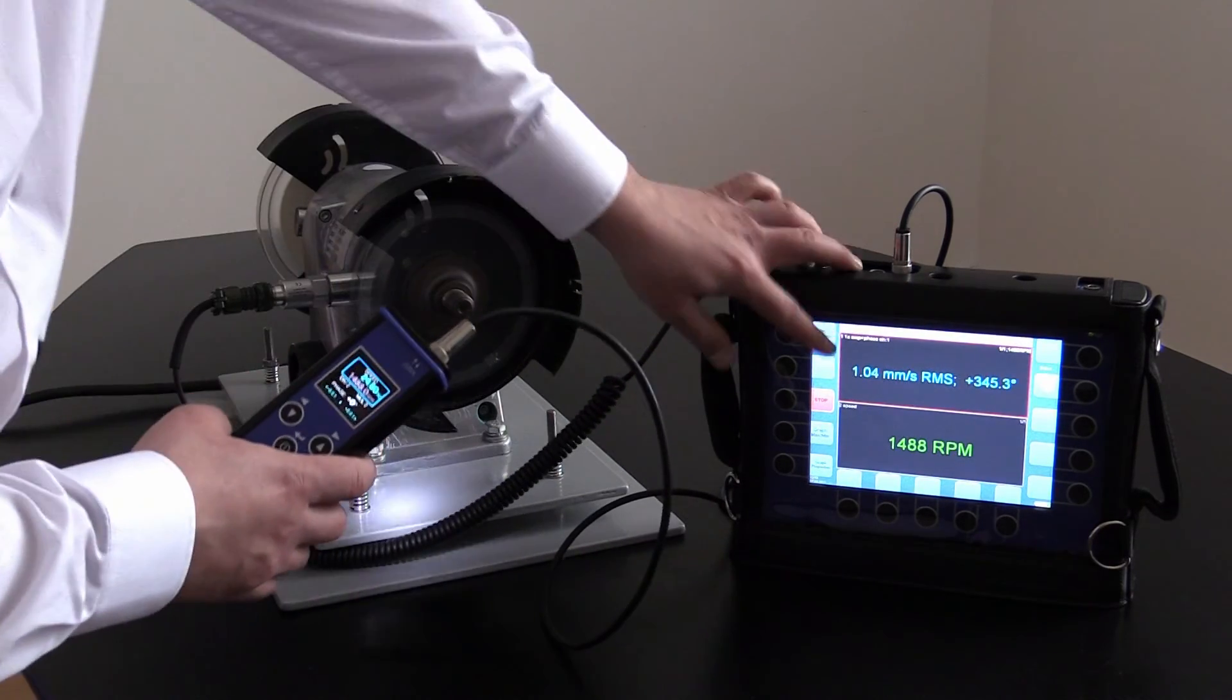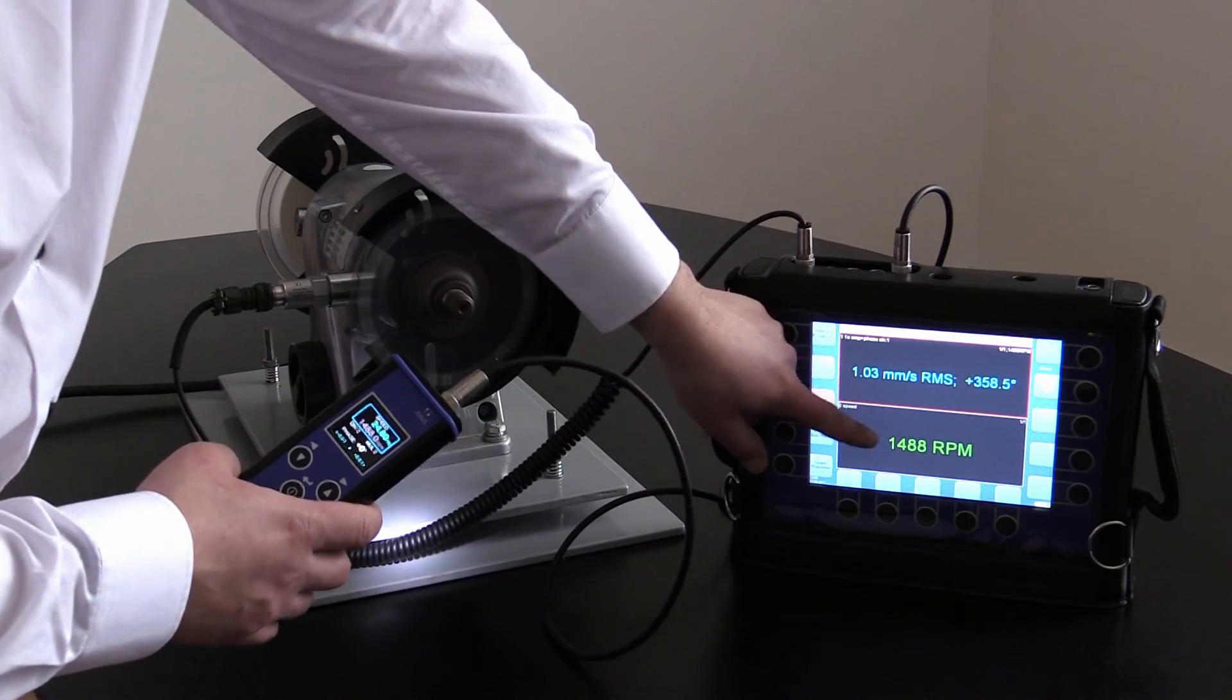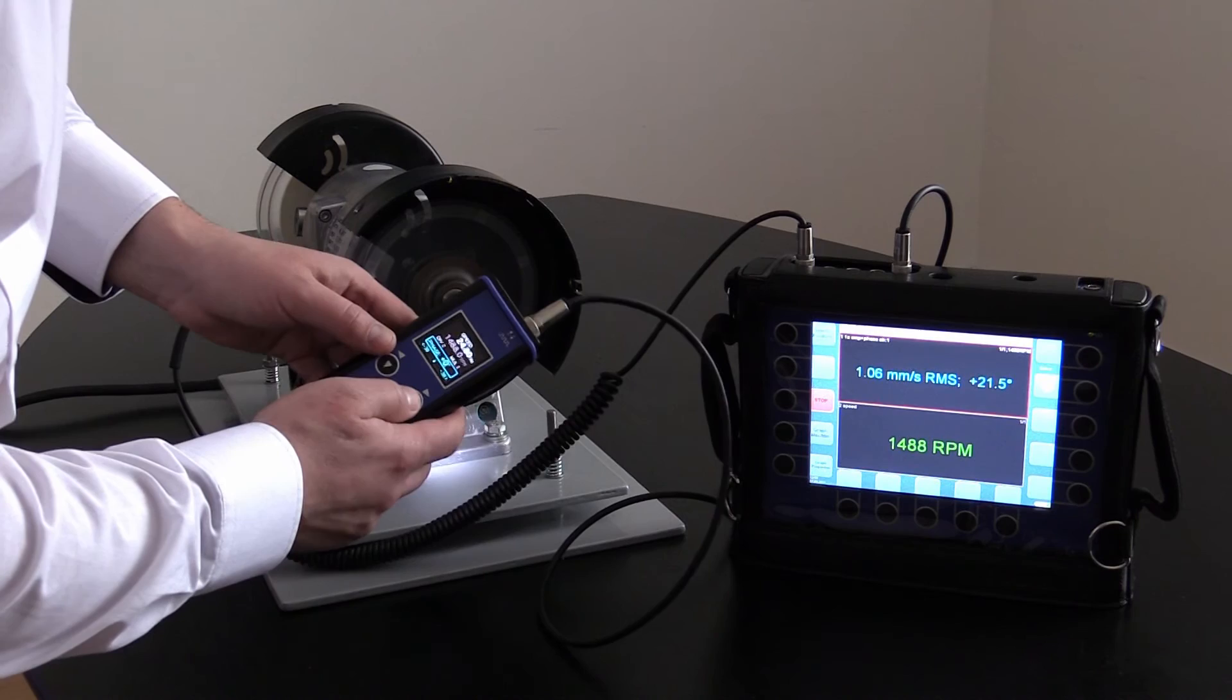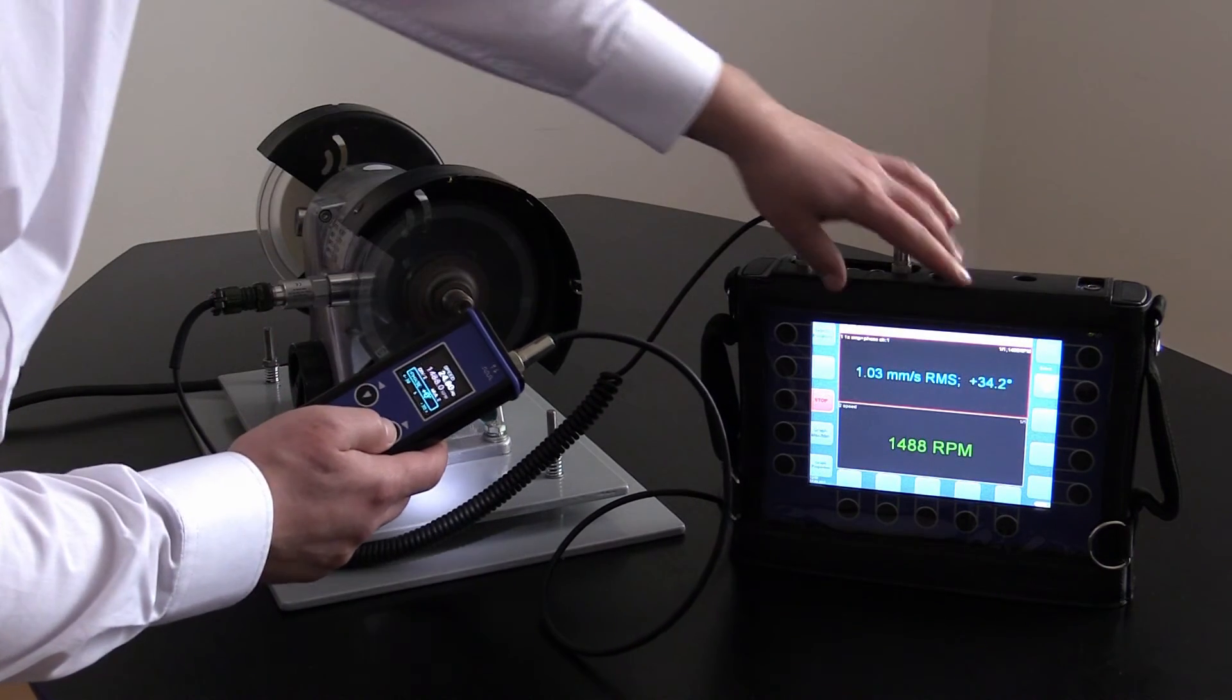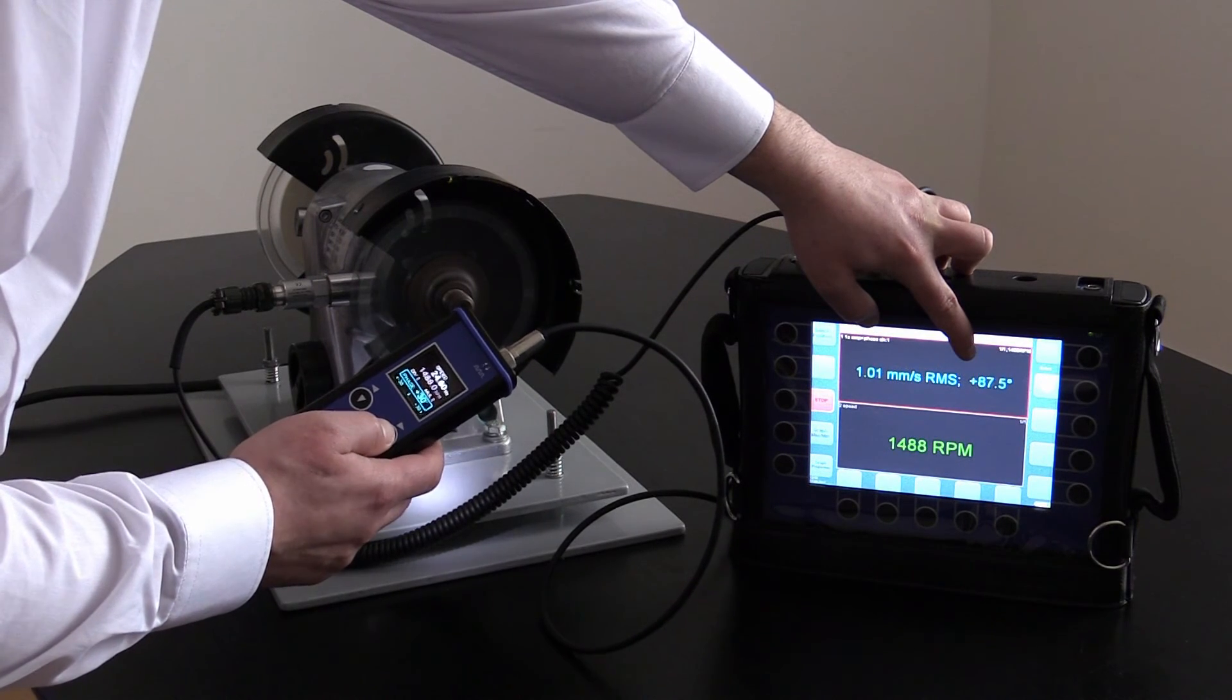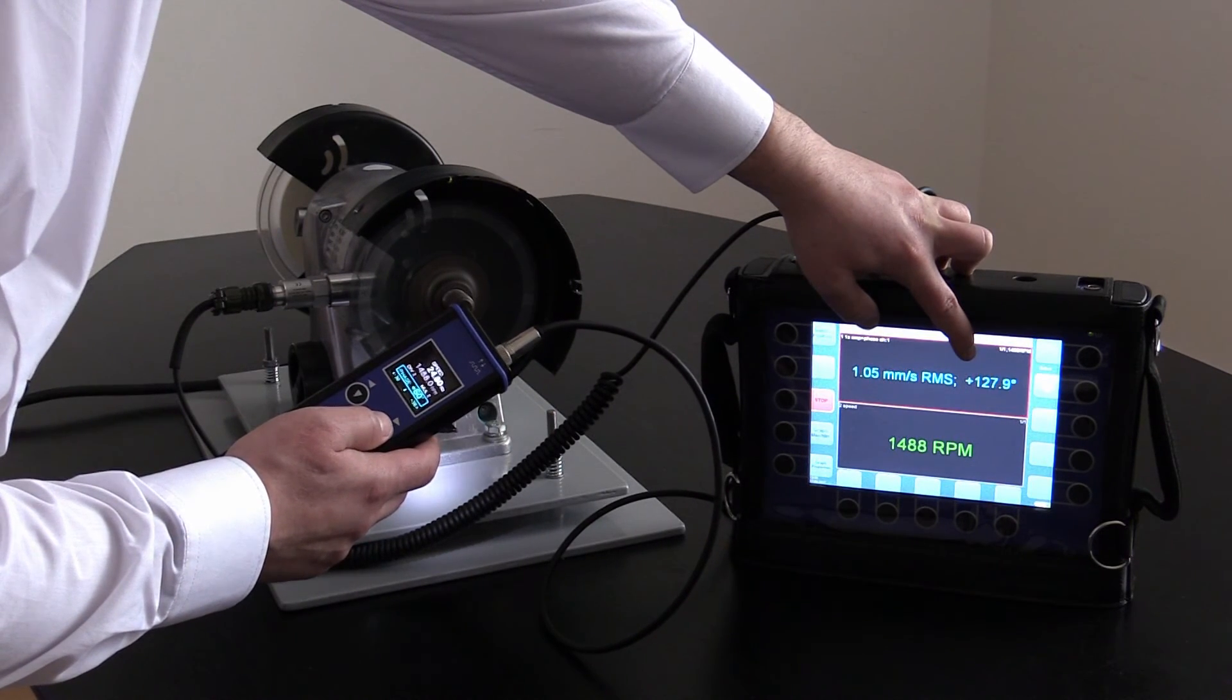And I can see my amplitude, phase and speed. If I will use the phase shift function, my step is 30 degrees now. I can see the phase is changing here in about 30 degrees here as well.